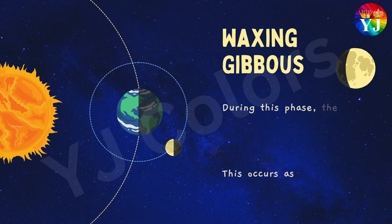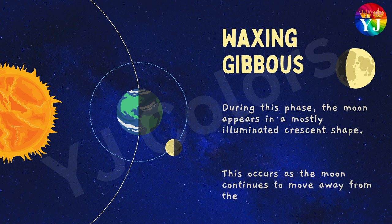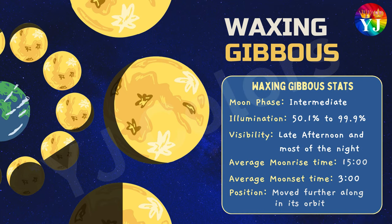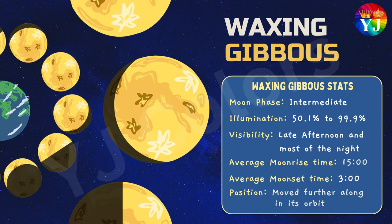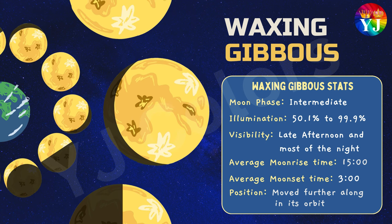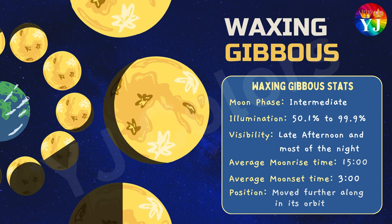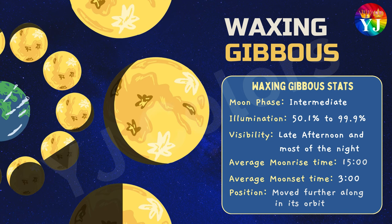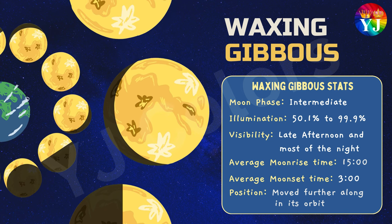Waxing Gibbous: During this phase, the Moon appears in a mostly illuminated crescent shape with only a small part appearing dark. This occurs as the Moon continues to move away from the first quarter phase and closer to the full moon phase. Statistics: Moon Phase — Intermediate; Illumination — 50.1% to 99.9%; Visibility — late afternoon and most of the night; Average Moonrise and Moonset Time — 3 p.m. to 3 a.m.; Position — moved further along in its orbit.